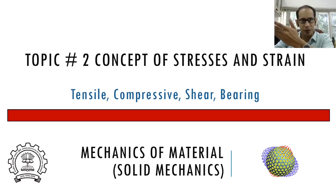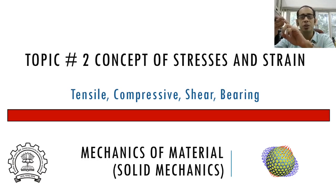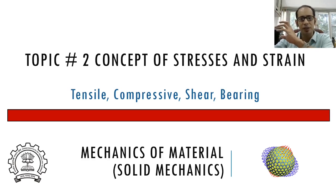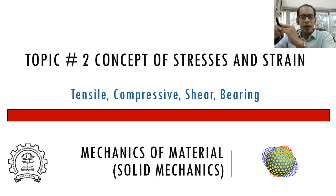Similarly, in structures, a particular set of loading on a particular structure will induce different kinds of stresses — the same building blocks. You may have tension, you may have compression, you may have shear, you may have bearing stresses. If you have another structure or a different type of loading, you will again have these kinds of stresses but maybe just in different proportions. So let us go ahead and get started.